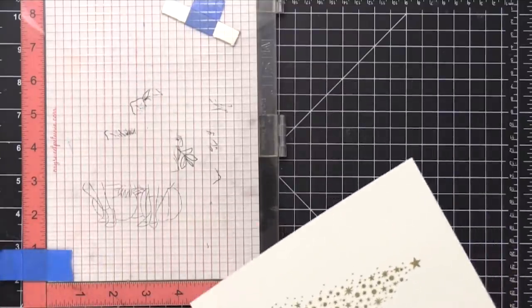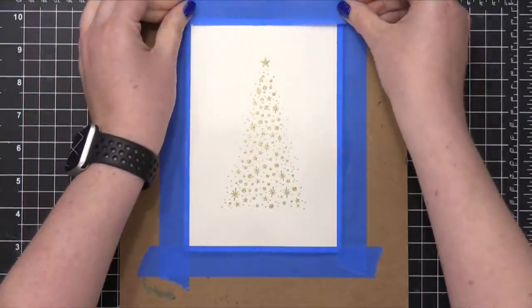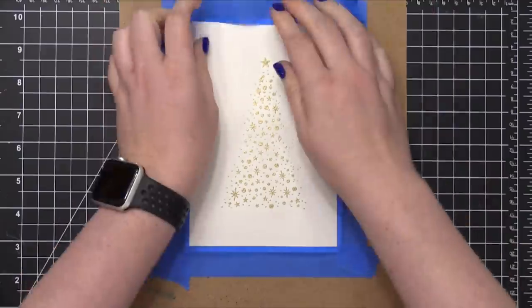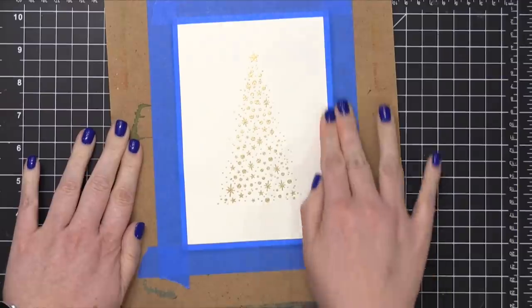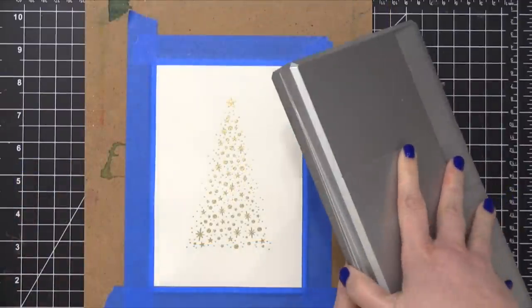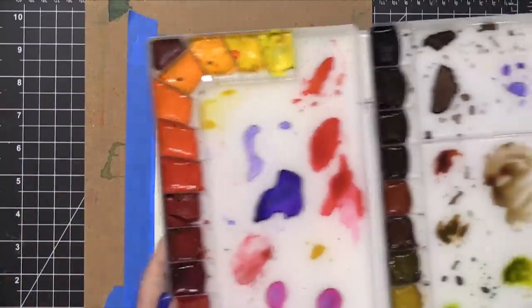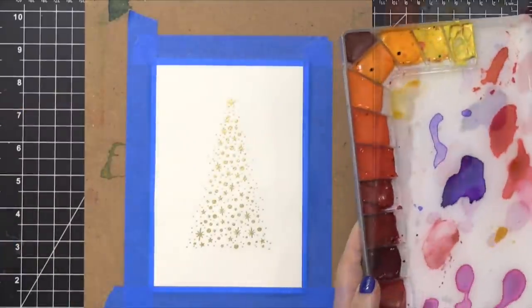Now I'm going to move on to the watercolor portion of this card front and this is where the bulk of my time was spent. I've taken some blue painters tape and taped this down to a hard board so that I can paint on top and it's going to help prevent the paper from warping as it dries.